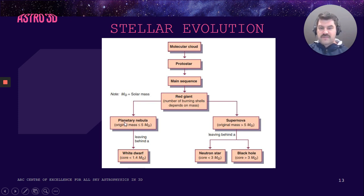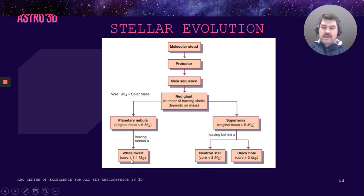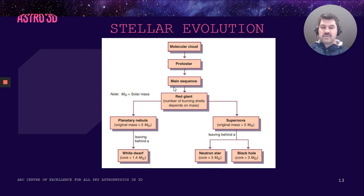We're going to mainly focus on the left-hand side of this diagram. If the star has less than or equal to five solar masses — five times the mass of our Sun — it'll explode in what's called a planetary nebula. Inside that nebula, it'll leave behind a white dwarf, a small stellar core with no more thermonuclear fusion. That core will be less than 1.4 solar masses. If it's any bigger, it'll explode. If the original star had more than five solar masses, it explodes not as a planetary nebula but as a supernova.